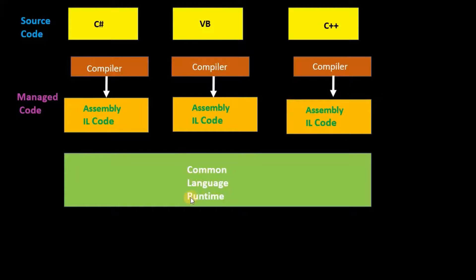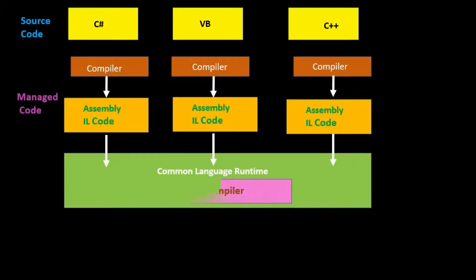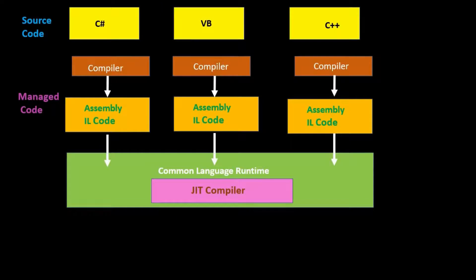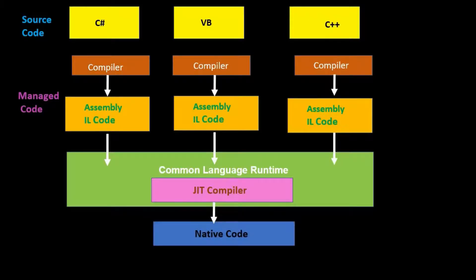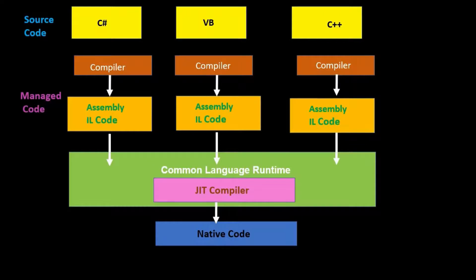CLR — that is Common Language Runtime — takes this IL code and gives it to the JIT compiler, that is the Just-In-Time compiler. The JIT compiler converts this IL code or MSIL code into native code, meaning binary code or machine code, which can be executed by the operating system.